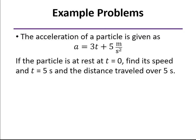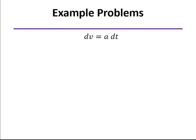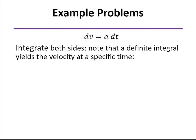So here's an example problem. We've got the acceleration as a function of time. We're told that the particle is initially at rest, which means its velocity is equal to zero. And we want to find its velocity at t equals five seconds and also the distance it travels over five seconds. So we start with our definition of acceleration and we can write that as dv equal to a dt. And we just have to integrate that.